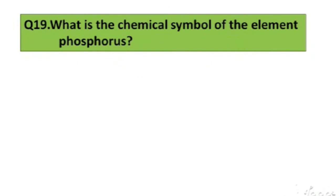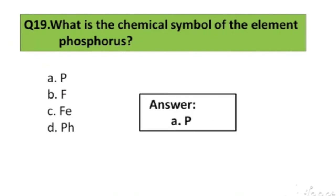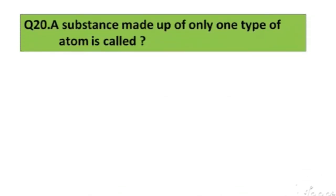Question number 19. What is the chemical symbol for the element phosphorus? A. P, B. F, C. FE, D. PH. The right answer is option A, P.